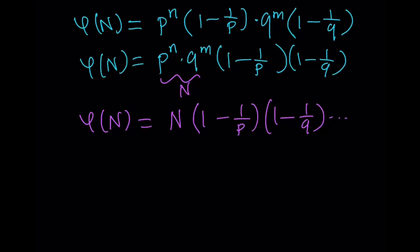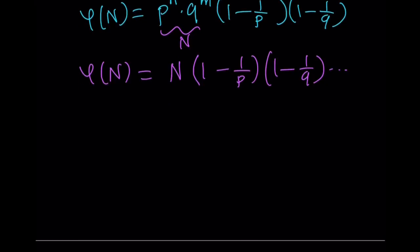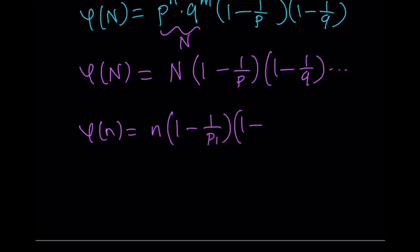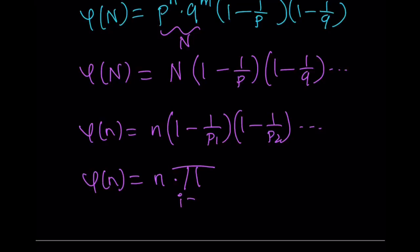Going back to our original problem, phi of n divided by n is less than 0.2, which I can write as 1/5. Using our formula, dividing both sides by n gives us the product: (1 − 1/p₁) times (1 − 1/p₂) times ... times (1 − 1/p_k) less than 1/5, where p₁, p₂, ..., p_k are the distinct prime factors.